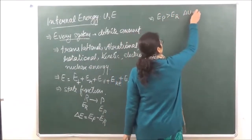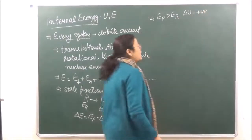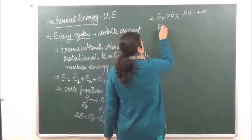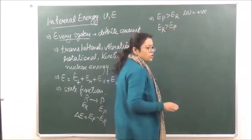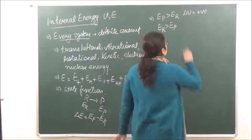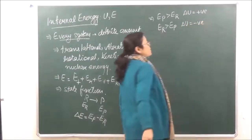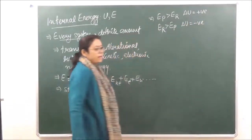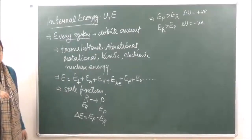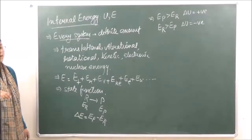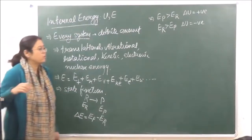If the value of E_P is greater than E_R, then delta U will have a positive value. And if the internal energy of the reactants is greater than the internal energy of the products, then delta U will have a negative value. If products' energy is more, delta U is positive; and if reactants' energy is more, delta U is negative.